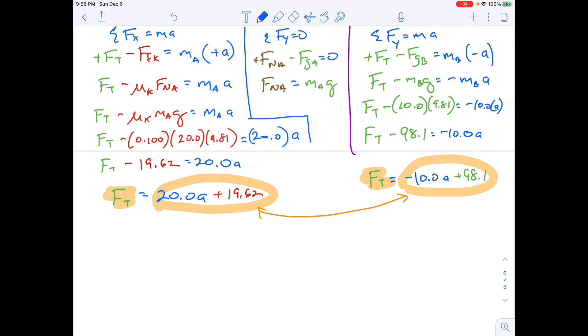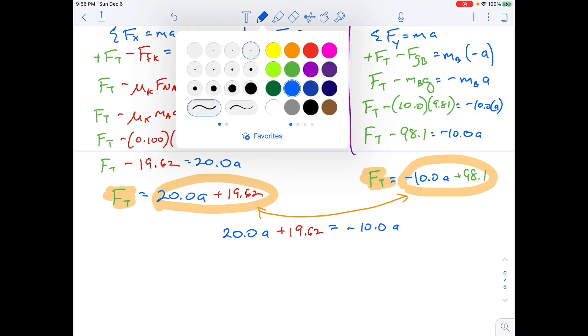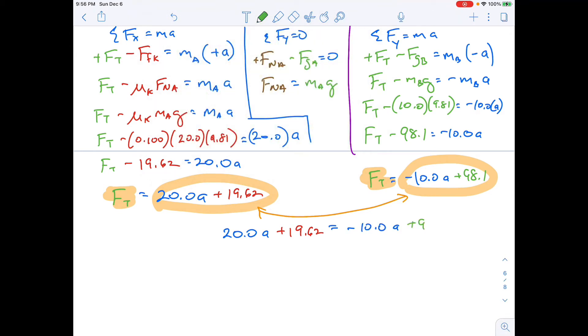So I can set this and this equal to each other. It's basically substituting, and it really is. So however math-wise you want to do it. But I'm going to take 20.0 A plus 19.62 equals negative 10.0 A plus 98.1.